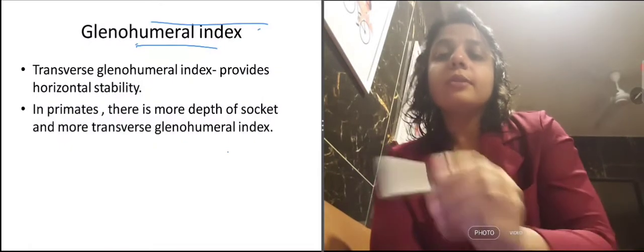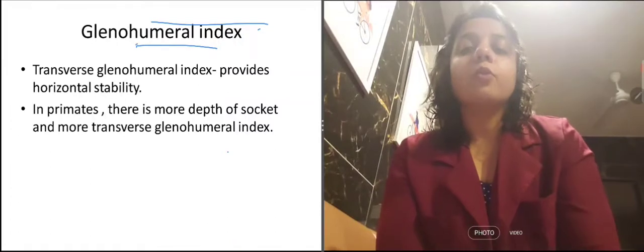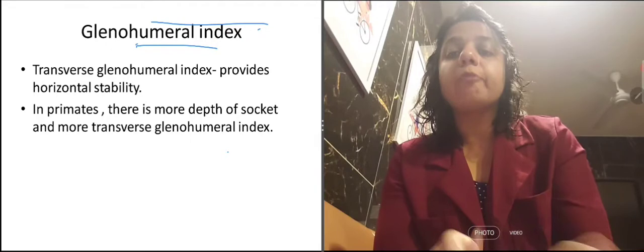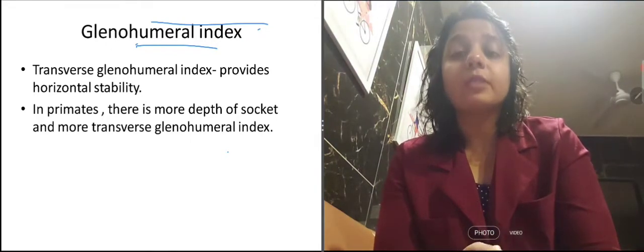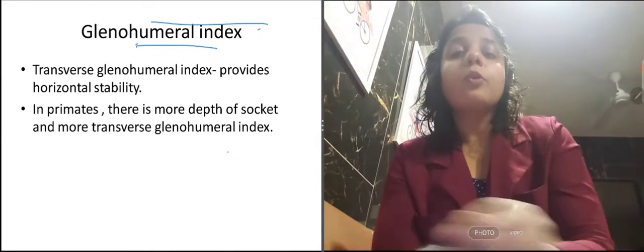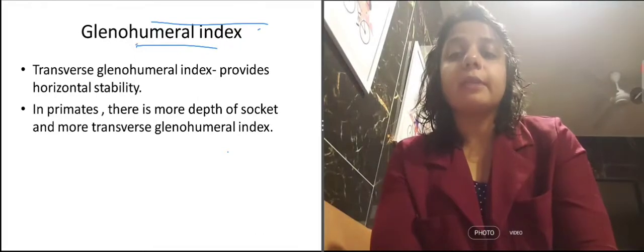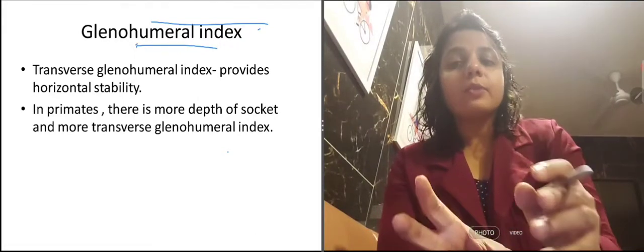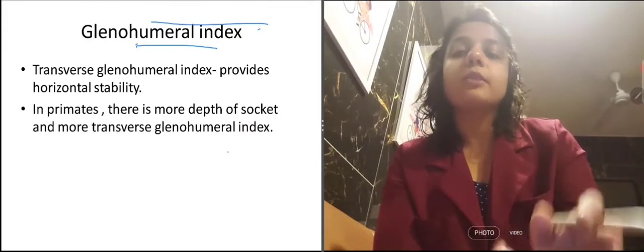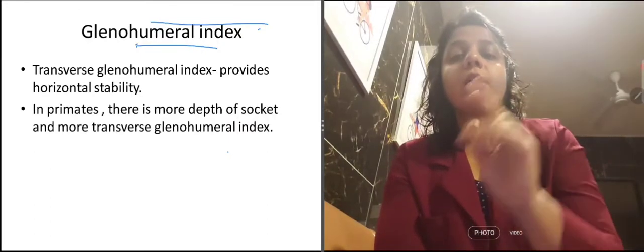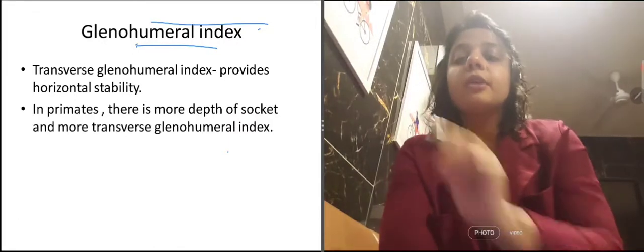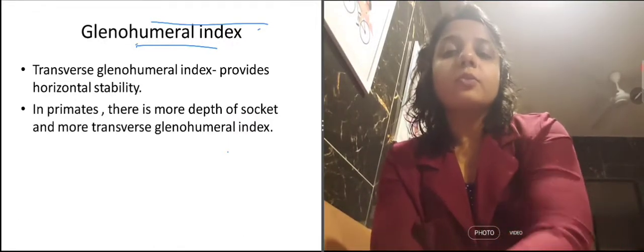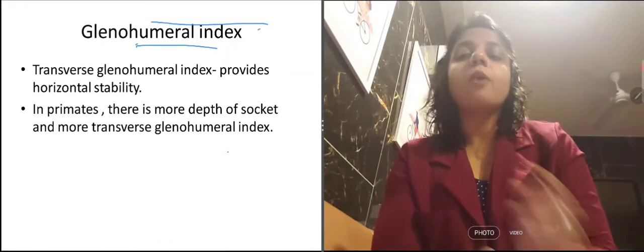Now let us look at the glenohumeral index. We have the glenohumeral index — vertical type and transverse type. The transverse glenohumeral index provides horizontal stability. The transverse glenohumeral index is calculated as: transverse diameter of the glenoid divided by the transverse diameter of the humeral head, multiplied by 100. That is how we calculate the glenohumeral index. The transverse glenohumeral index provides horizontal stability.